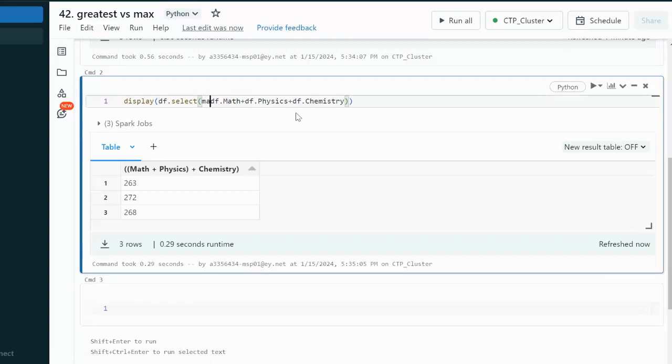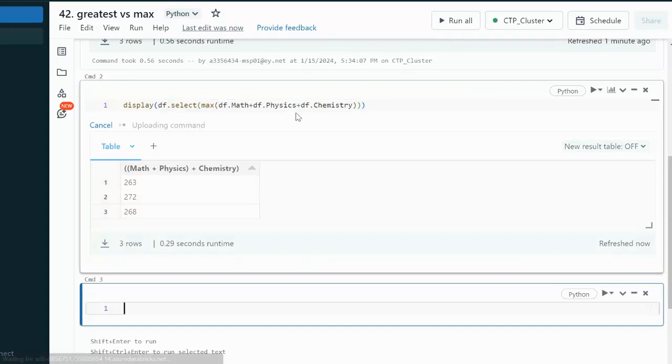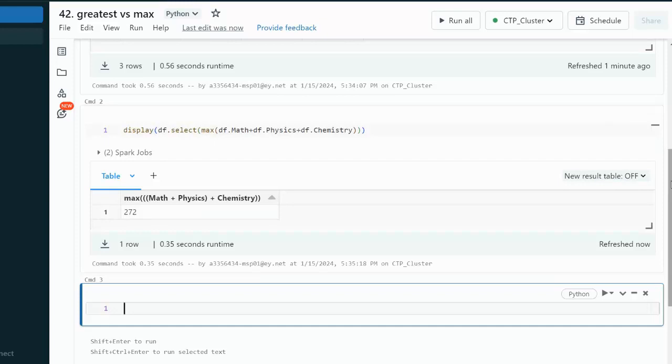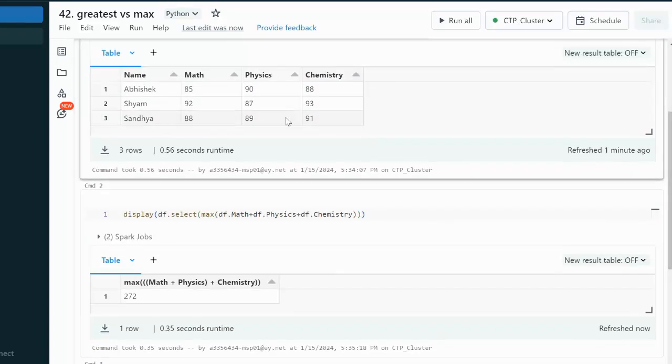Inside this select we can simply use the max function and let me execute. What it will be returning? It is returning 272. It means the total max that we are having 272 between these three employees.